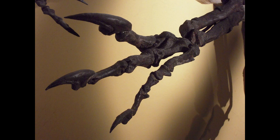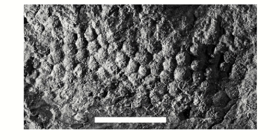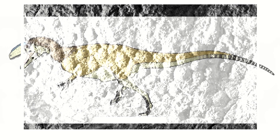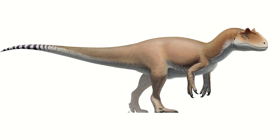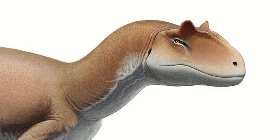Was it fuzzy? Same answer again: no idea. Skin impressions have been found from Allosaurus showing scales, but they've all been from the underside of the dinosaur, so it still remains possible that it had some sort of feathering along its back. But we don't have any direct evidence of that, so scaly dinosaur fans can breathe easy for this round.